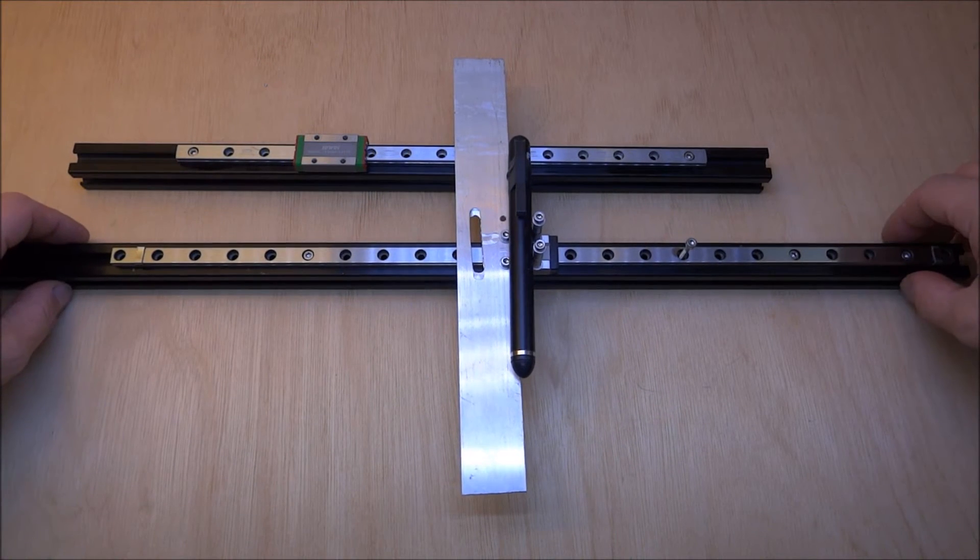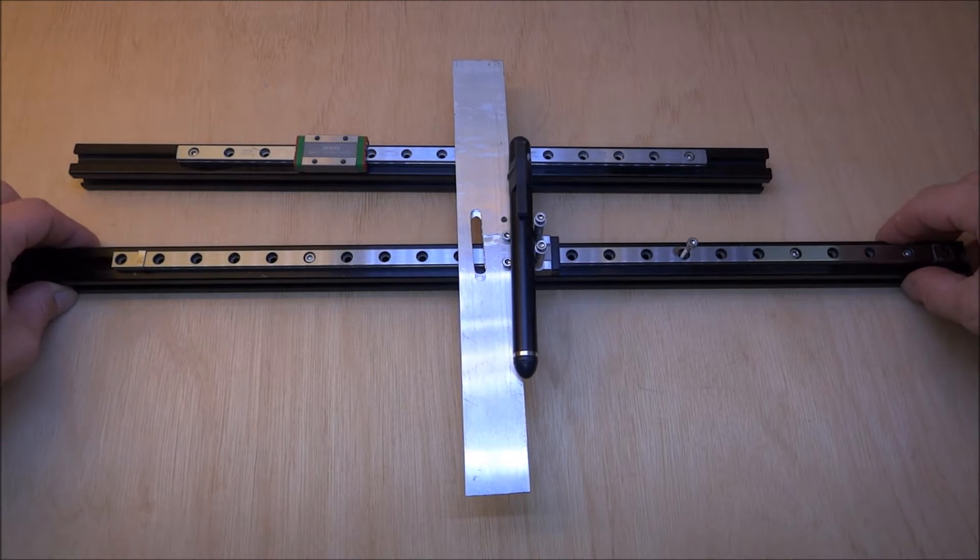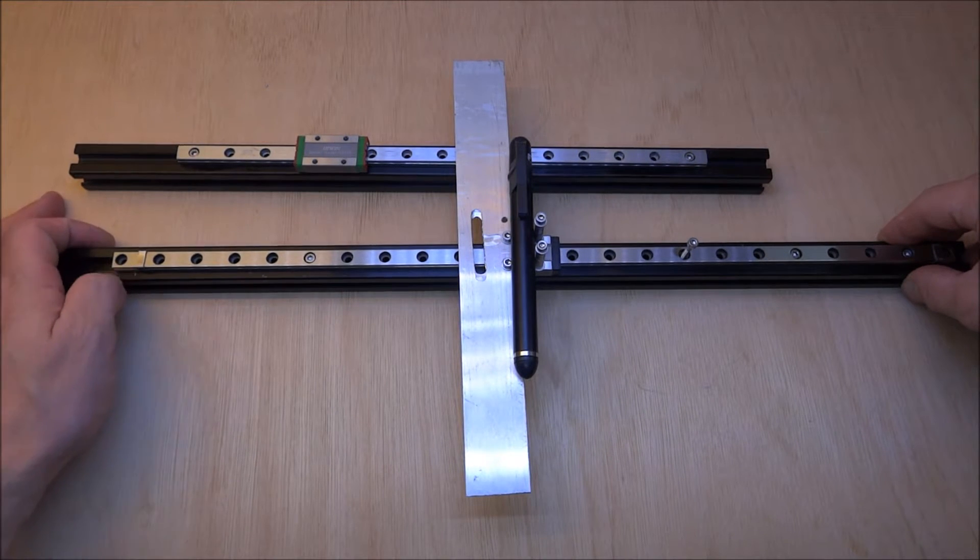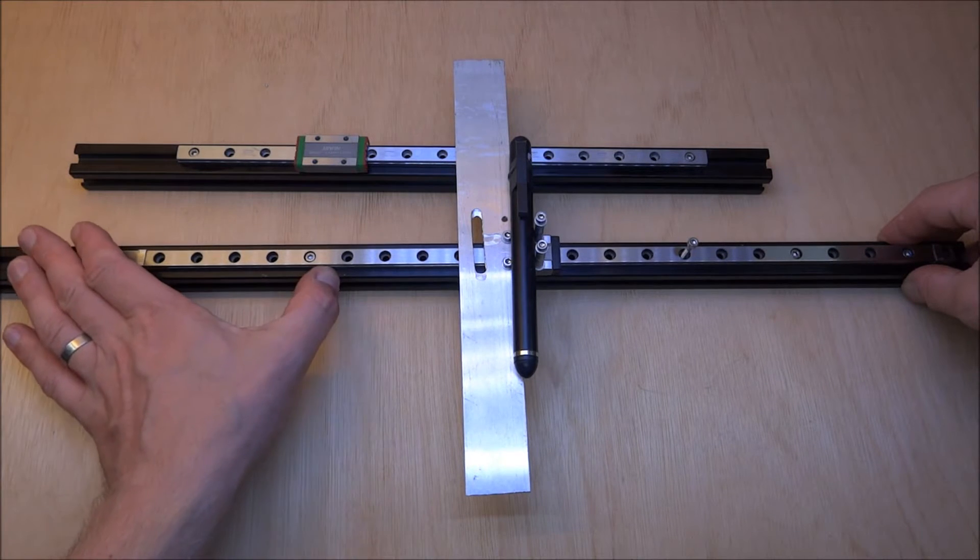Hi there, I just wanted to give a little overview of the coarse test rig I used to measure what kind of deflection we might expect from the RobotDig and Hiwin MGN9 linear guides.